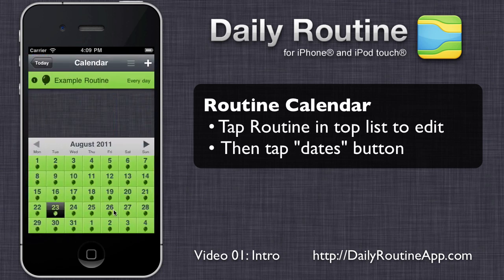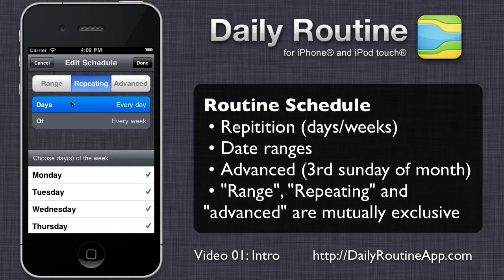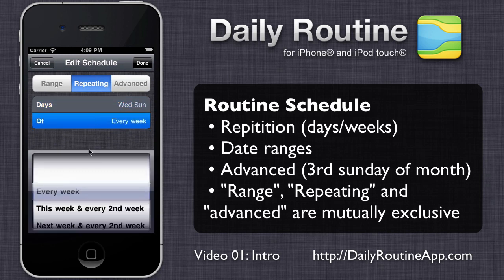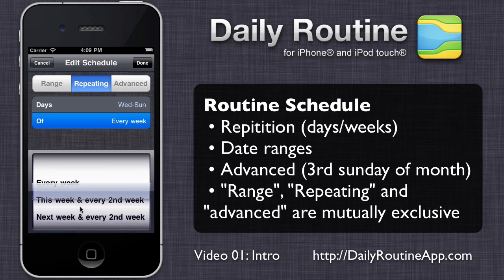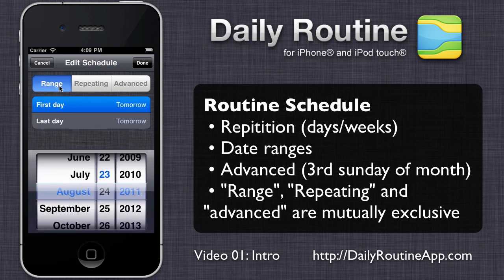To change your routine schedule, tap it in the top list, then tap the dates button. We can change the scheduled days and the scheduled weeks. Alternatively, we can specify a specific date range.